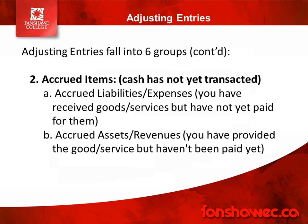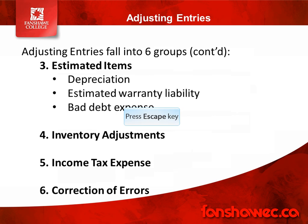All of this should definitely be review for you, just getting the gears turning again and getting back into accounting mode. The next four categories are common, but not quite as common as the first two. The third category is estimated items, which includes depreciation, estimated warranty liability, and bad debts expense. Think about why these are considered estimated items — we know we need to record them because our statements would be inaccurate without these adjusting entries.